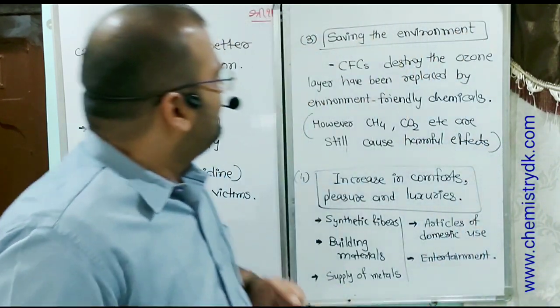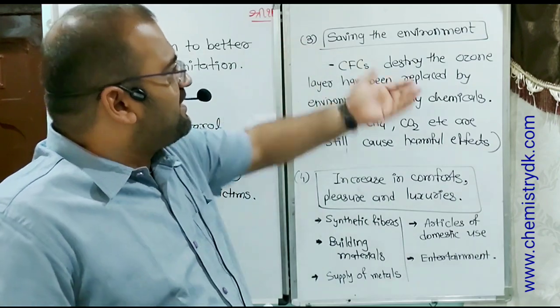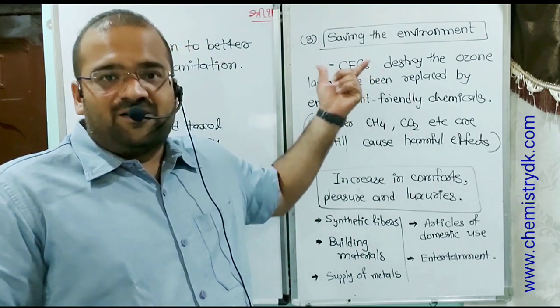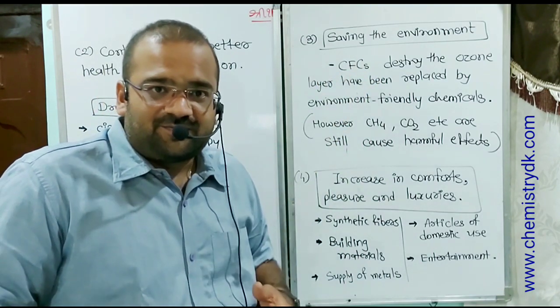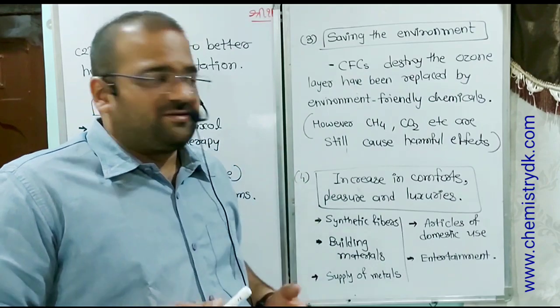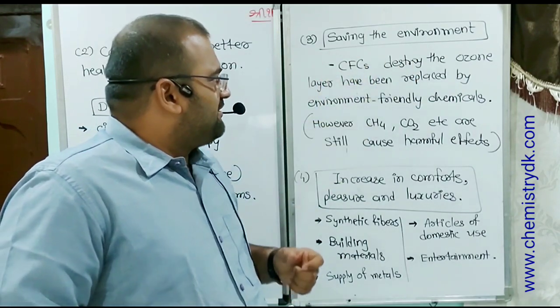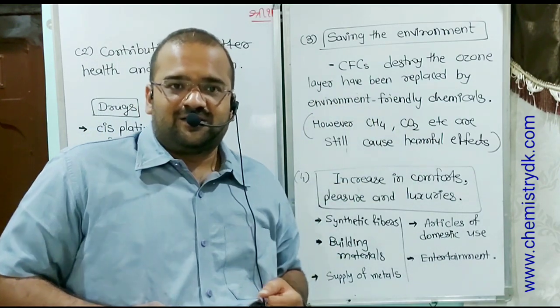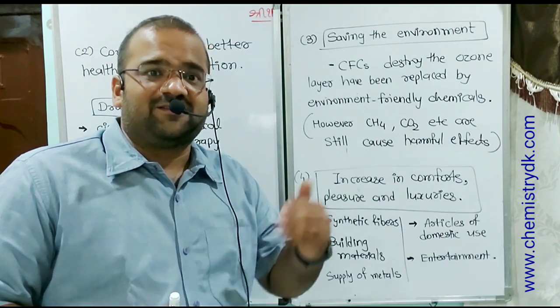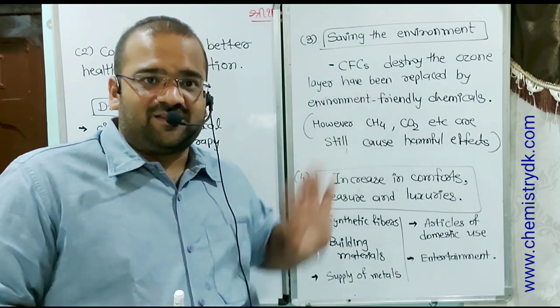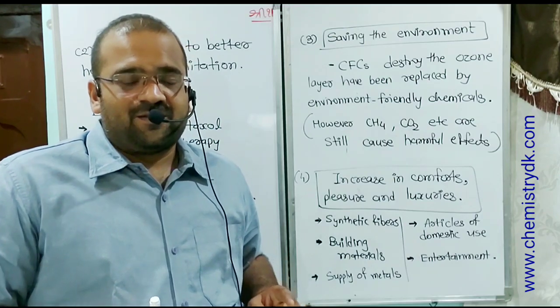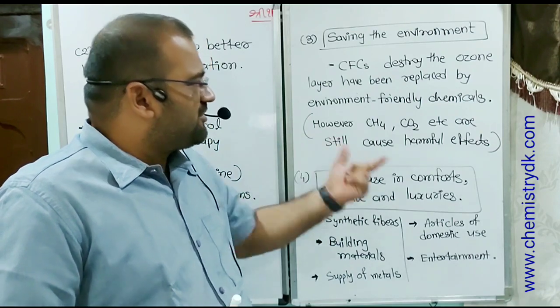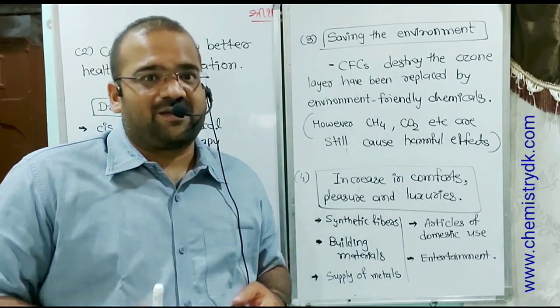As well as in saving environment, chemicals can be used. Some chemicals like CFC, once upon a time used as a refrigerant and in air conditioners. CFC destroyed the ozone layer and has been replaced with environment friendly chemicals. Nowadays, we are using HFC-134A instead of CFC which is environment friendly. But still CO2, CH4 methane are still causing harmful effects and that is the challenge for chemists.